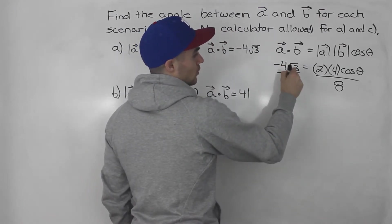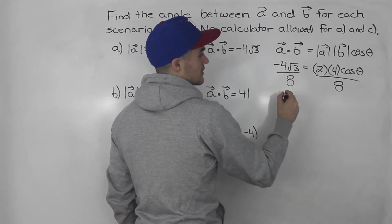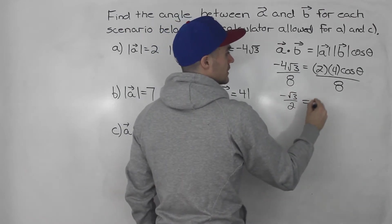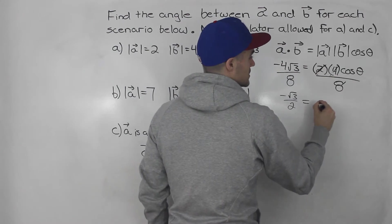Then negative 4 over 8 simplifies to negative 1 over 2. So we have negative root 3 over 2 equals cos theta.